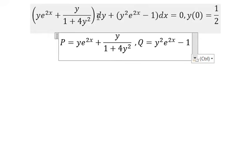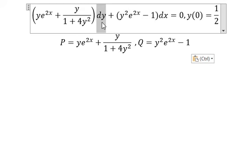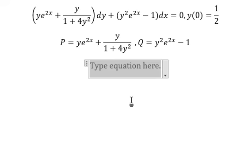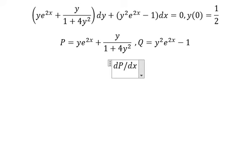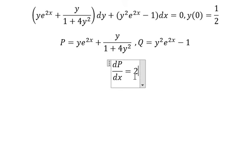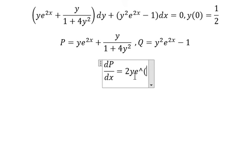If we look carefully, we have dy, so we need to do the first derivative of this function. With respect to x, that should be dP over dx. We just have e to the power of 2x in here, so the first derivative gives us 2y times e to the power of 2x.